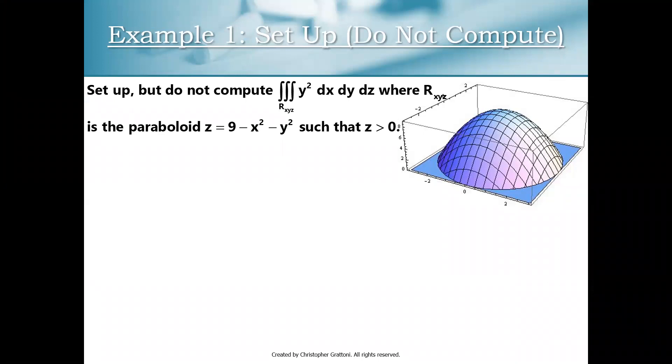So for our first example we're going to look at the triple integral of y squared over a particular 3D region. Now this 3D region is the space that's trapped between a paraboloid that's opening down, so basically 9 minus x squared minus y squared, and the xy plane z equals 0.